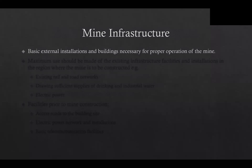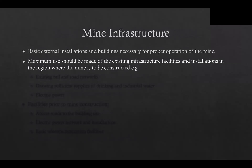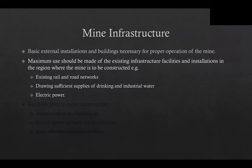Mine infrastructure includes all the basic external installations and buildings necessary for proper operation of the mine. The infrastructure has a considerable influence on the location of the main mine surface. Maximum use should be made of the existing infrastructure facilities and installations in the region where the mine is to be constructed. In particular, the possibility of linking the mine with the existing rail and road networks, drawing sufficient supplies of drinking and industrial water, and of electrical power. Linking up with existing infrastructure is usually easier when the mine is constructed in a region where mining development has already taken place.